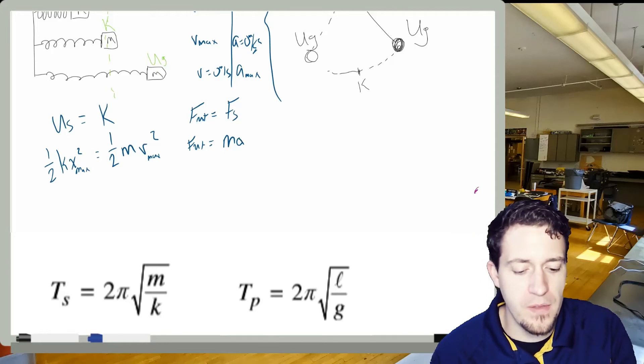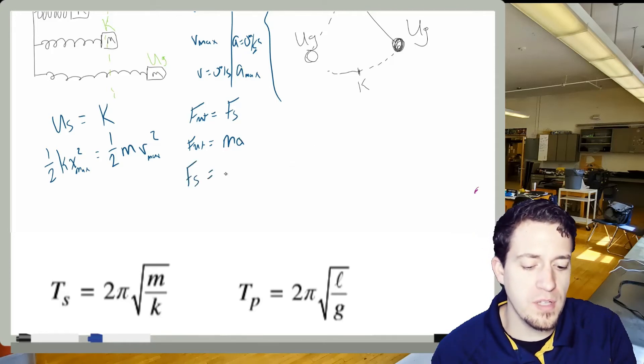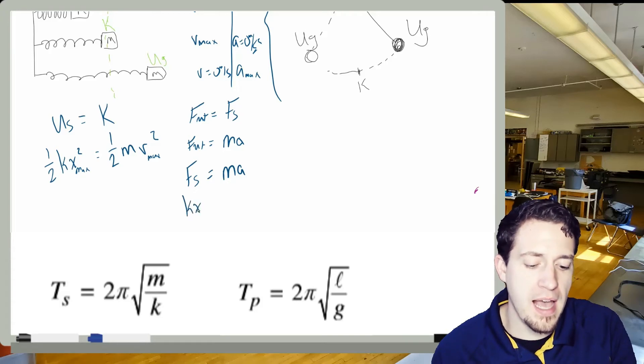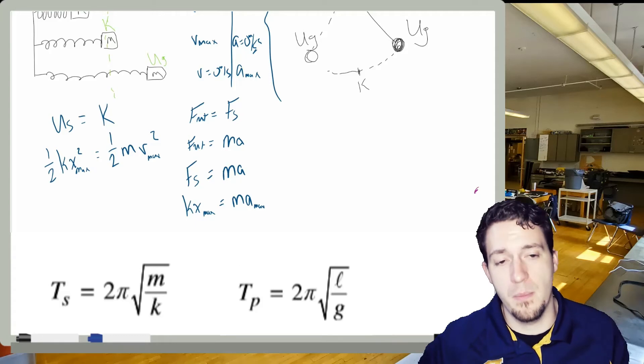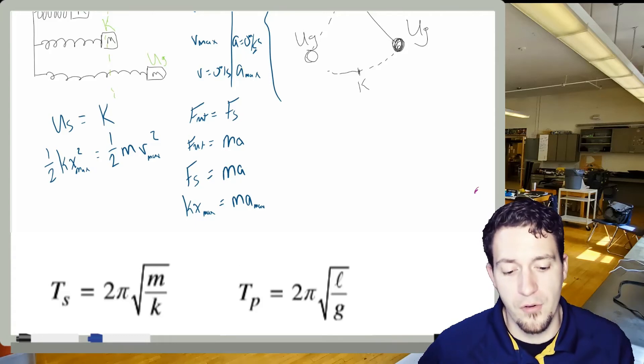Okay, so if I wanted to solve this, it would be that the spring force is equal to ma. So then this would be kx, and this would be max, would be ma max. And I could use these two to figure out the maximum speed and also the maximum acceleration for my spring system.